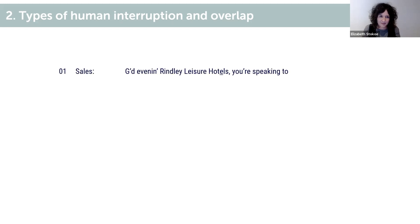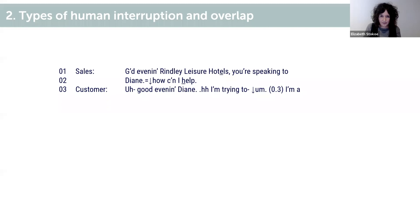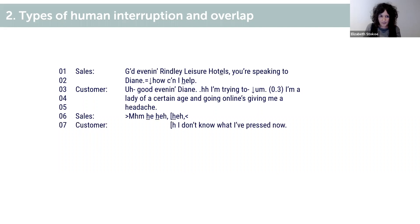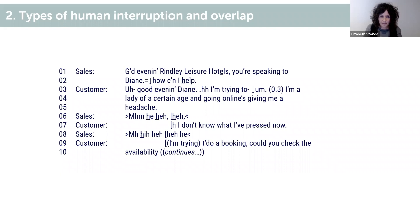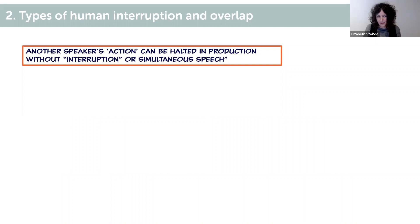This next example shows how it doesn't even take an overlap or clash of voices to make an interruption happen at all. This is from an interview between a suspect of a crime and a police officer. In this interview, you can halt somebody else doing something without actually interrupting them at all.